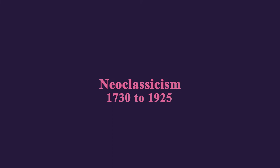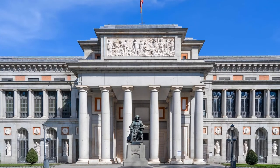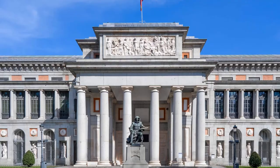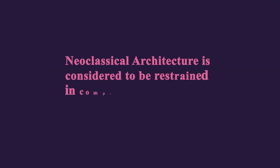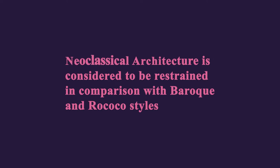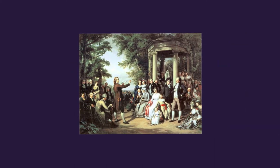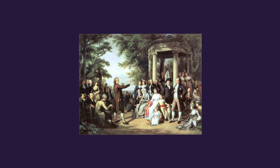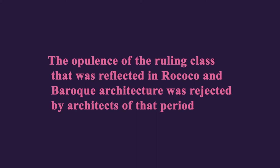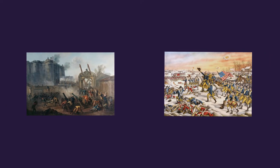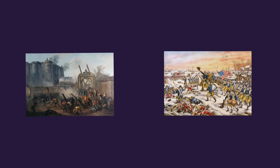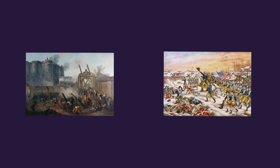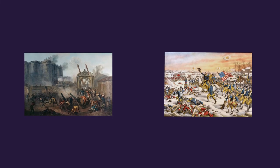Neoclassicism, from 1730 to 1925. Just like the Renaissance period, neoclassical architecture is the rediscovery of classical Greek and Roman architecture. It is considered restrained in comparison with Baroque and Rococo styles. It reflects the intellectual awakening among the middle and upper classes in Europe during a period historians call the Enlightenment. The opulence of the ruling class reflected in Rococo and Baroque was rejected, and the French and American revolutions returned design to classical ideals, including equality and democracy.